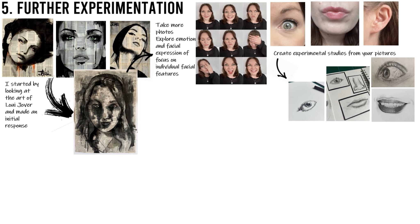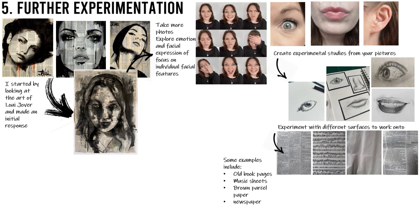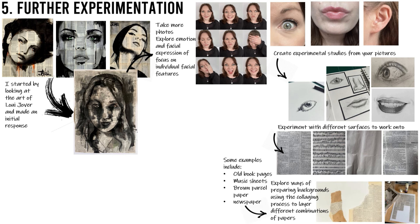From my photographs I created some experimental studies, using the pictures and also looking in the mirror. I then looked at different surfaces to work on — old book pages, music sheets, brown parcel paper, and newspaper — and explored ways of preparing the backgrounds using collaging processes to layer different combinations of papers.